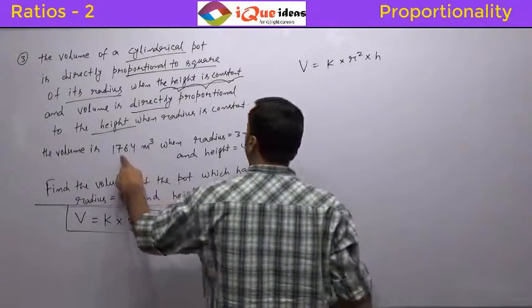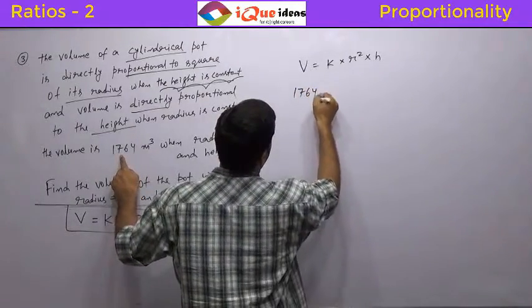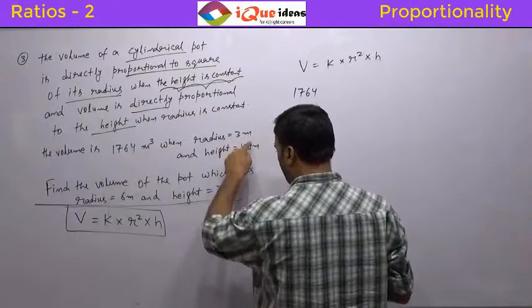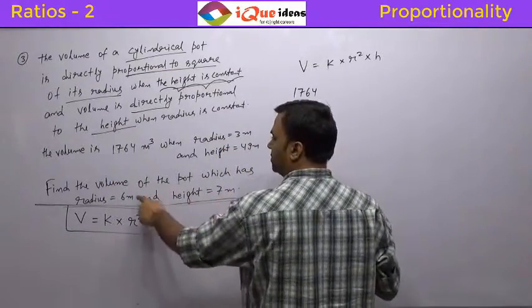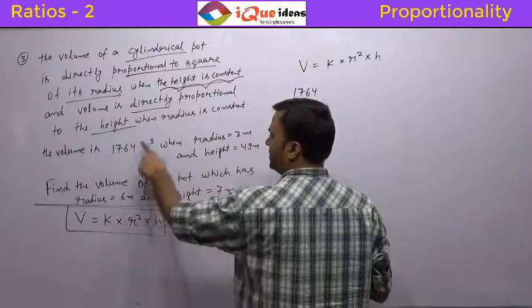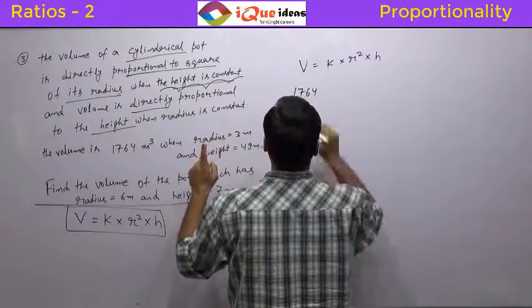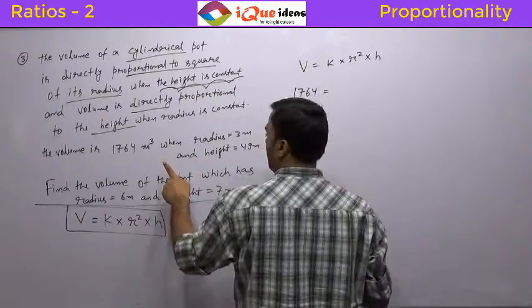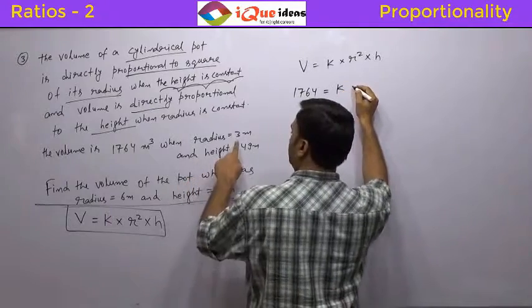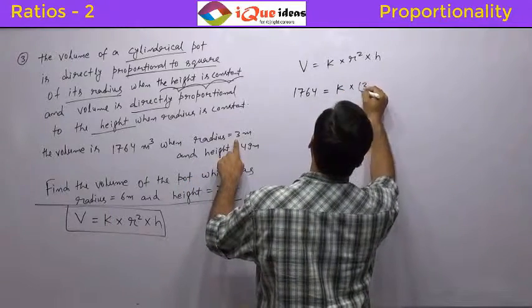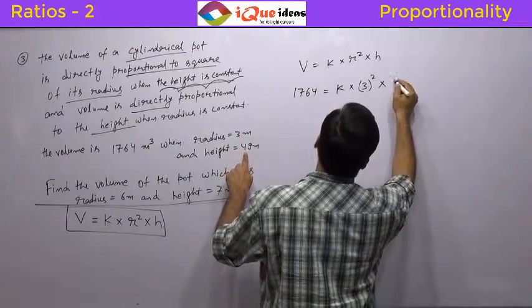Now the first situation says volume is 1764. All of them are in the same unit so I am not going to write unit because conventionally they should have same unit. So we will directly write 1764 is equal to k into the first situation radius is 3. So it is 3 square into height is 49. So 49.